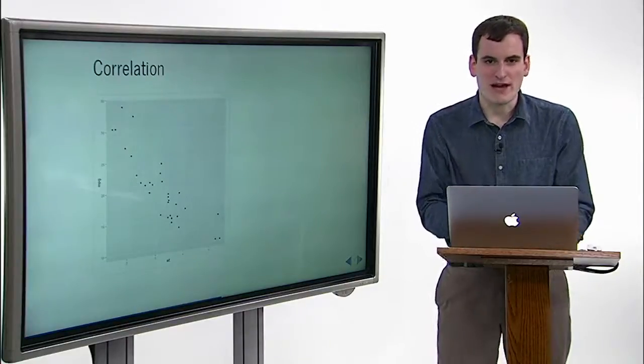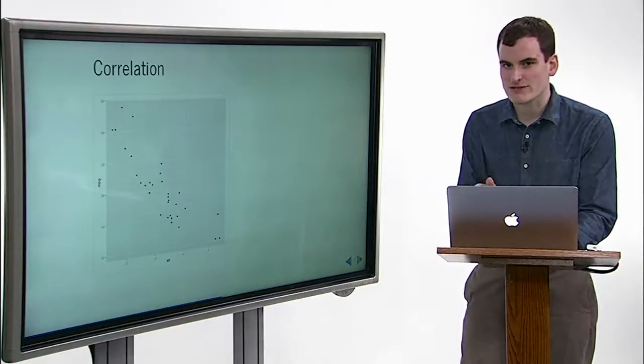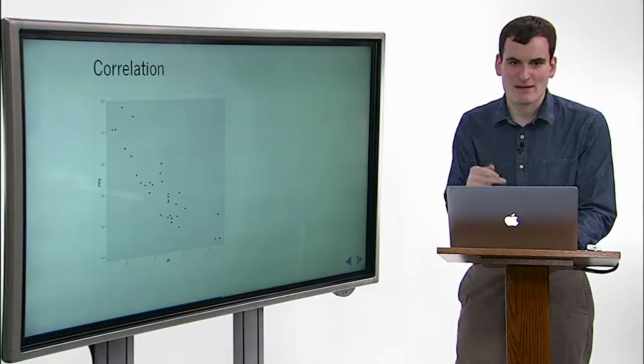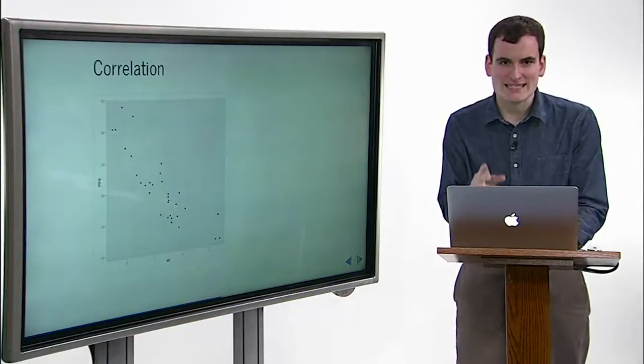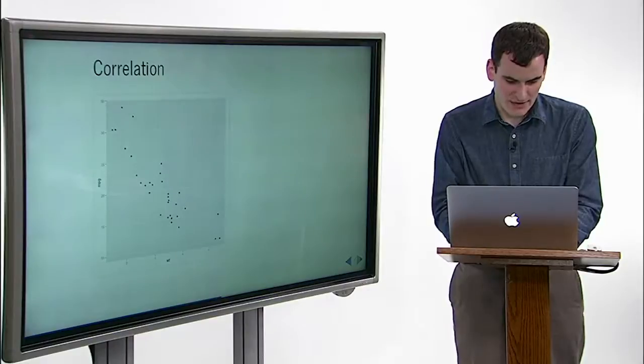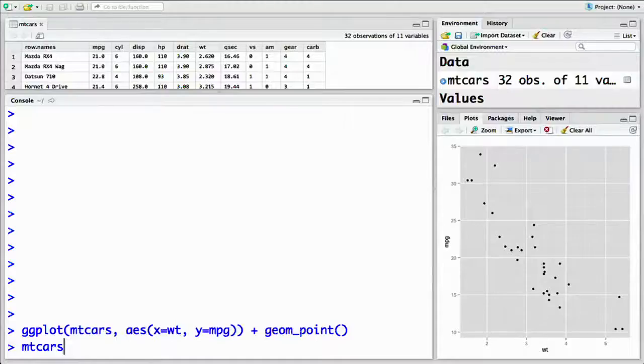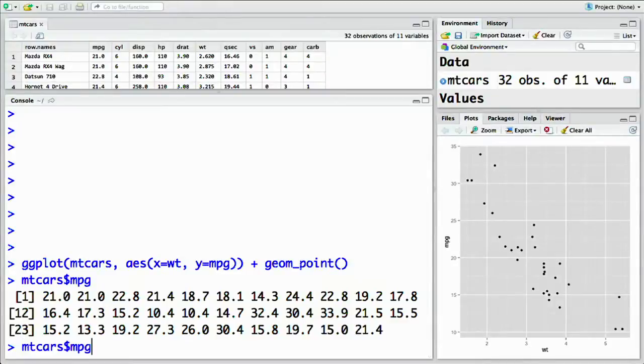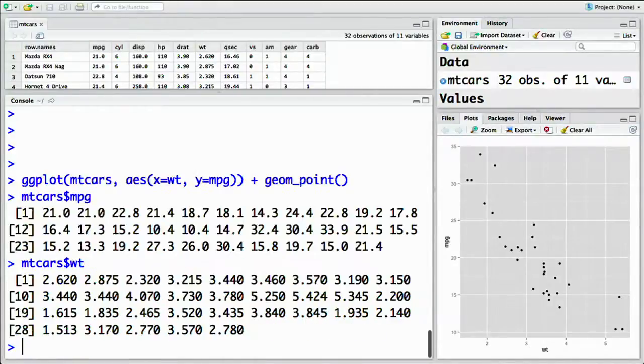We're comparing two vectors here, the column describing the miles per gallon fuel efficiency of each car, and the column describing the weight in pounds. Recall that we can access a single column using a dollar sign. mtcars, dollar sign, mpg for miles per gallon, and wt for weight.